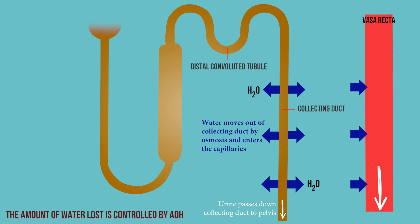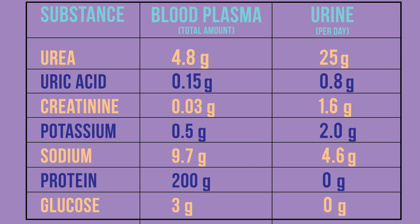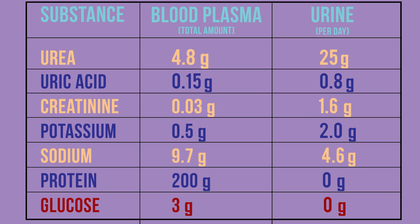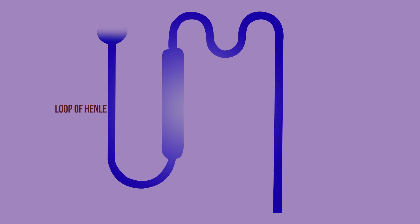The actual amount of water loss is controlled by ADH, which will be covered in a future video. Here we can see a comparison of the composition of plasma and urine. The urine has a higher concentration of all solutes except sodium ions, and normally lacks protein and glucose. The loop of Henle helps to conserve water.